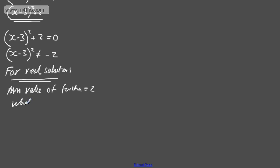So we can say the minimum value of the function is equal to 2 and that happens when x is equal to 3. When x equals 3, therefore it will never be equal to 0.